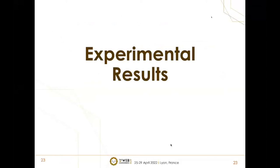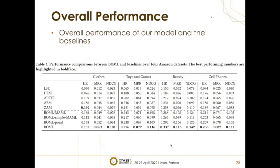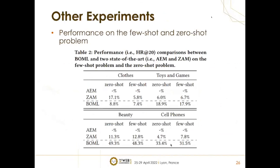We conduct experiments on the publicly available Amazon dataset. The statistics of four chosen datasets are shown on the screen. We define users with zero search records as zero-shot users, and users with fewer than five search records as few-shot users. The overall performance of our model and the baselines are shown on the screen. The results illustrate that our model achieves better performance than existing methods. Moreover, we show that our model alleviates the few-shot and zero-shot learning problems for these user groups.